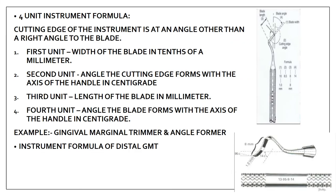The four-unit instrument formula has four numbers instead of three. In this formula, the cutting edge is at an angle other than 90 degrees to the blade, unlike the three-unit formula where the angle was 90 degrees. An example of a four-unit instrument is the gingival marginal trimmer, where the angulation between the cutting edge and the blade is not 90 degrees.